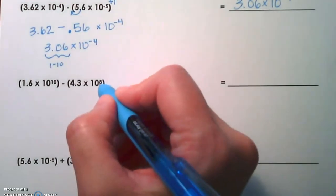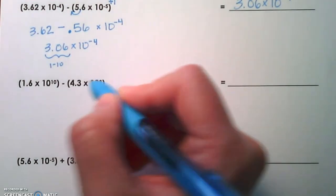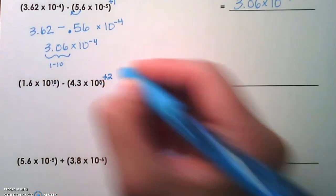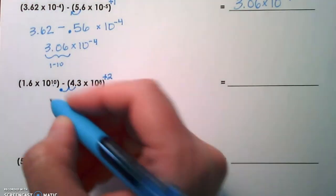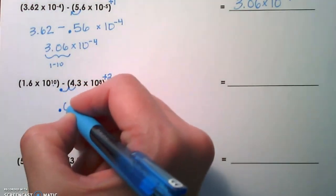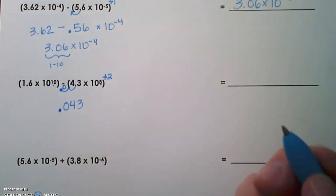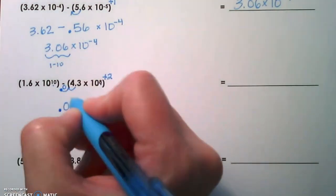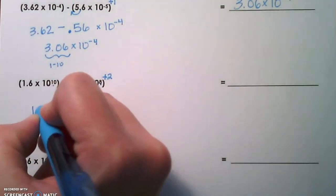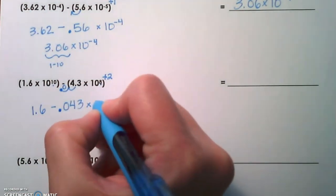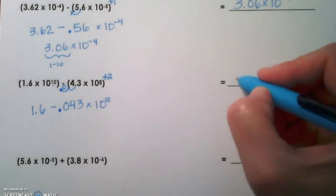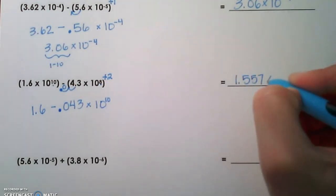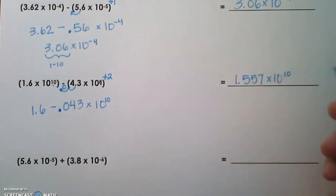In the third example, we've got an exponent of 8 compared to a 10. So we are going to add 2 to the 8, which means we're going to move the decimal two places to the left, which makes 0.043. We would use a zero there as a placeholder. And we are going to subtract 0.043 from 1.6. And we're going to keep our power of 10 times 10 to the 10th. Go ahead and subtract those numbers, and we get 1.557 times 10 to the 10th power. Double check that factor. Is it between 1 and 10? Yes, we are good to go.